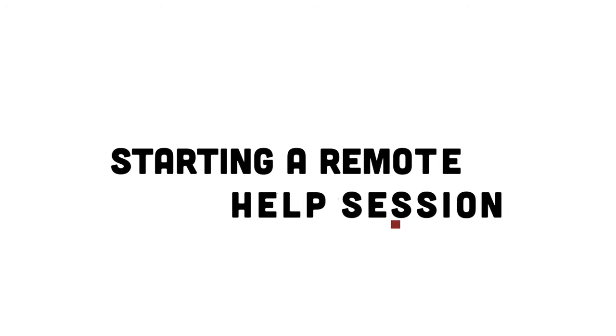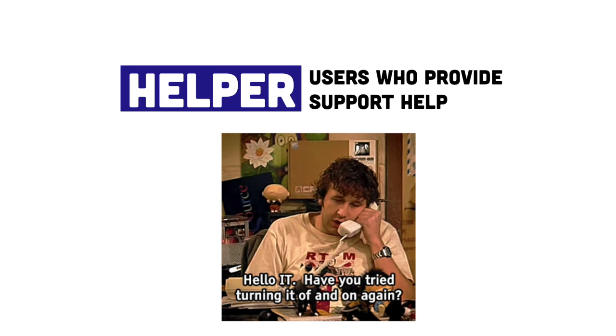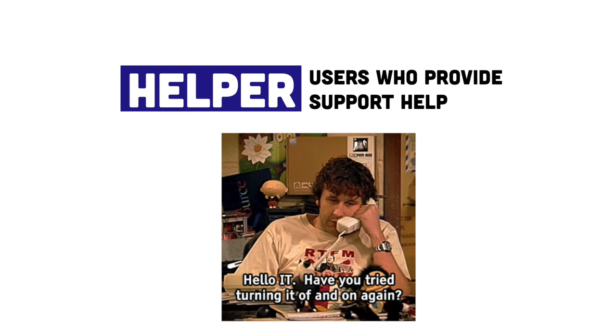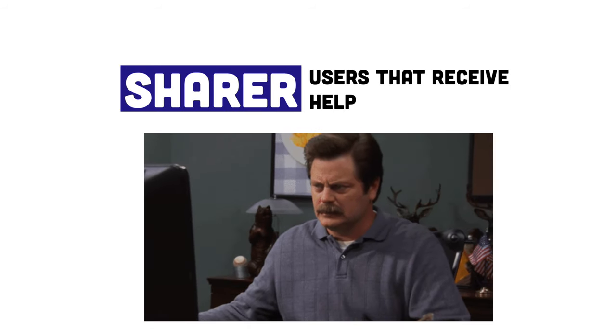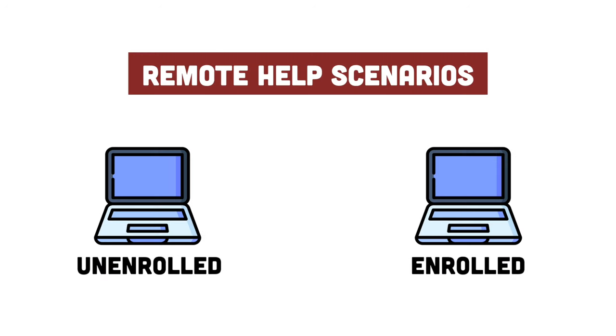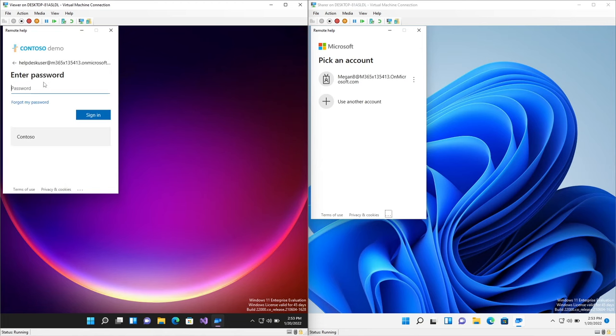Now let's look at Remote Help from a terminology perspective. The helper is the support engineer or person providing assistance. The sharer is the person who needs assistance. In this example, we're going to look at this from an unenrolled device. Both the helper and the sharer need to start the Remote Help app on their device and sign in and authenticate into their organization. After signing in, the first thing we can do is request a security code as the helper.